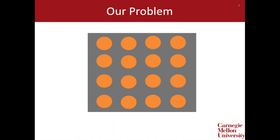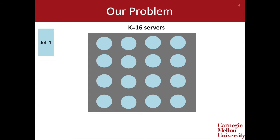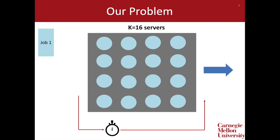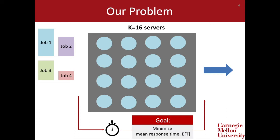Our problem considers a data center with some fixed number of servers k — for example, k equals 16 servers. Jobs arrive and must be scheduled onto some of the servers to be completed. Here we'll allocate all 16 servers to job one. For each job, we measure the time between when it arrives and when it is completed — we refer to this as the job's response time t. Many jobs arrive over time and our goal is to minimize the mean response time E[T] across jobs. This may require reallocating servers from one job to others, and we assume reallocation can be done instantaneously and without overhead.